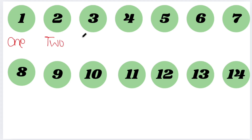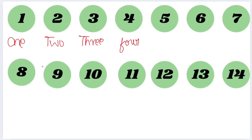This is 3: T, H, R, E, E. Then 4: F, O, U, R. So this 3, 4 you could have known. And 5, 6, 7, 8, 9, 10.